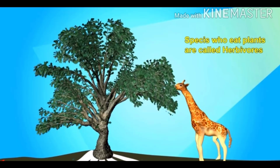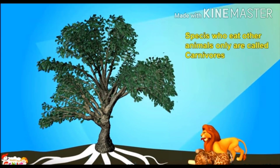After plants, we will talk about the animals that depend on plants for their food. The species that eat plants are called herbivores. Animals that depend on plants for their food are called herbivorous animals, or herbivores. For example, in the picture there is a giraffe eating plants.